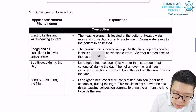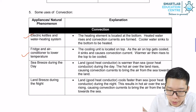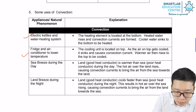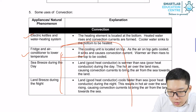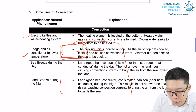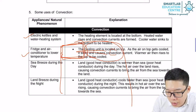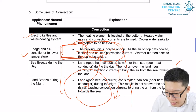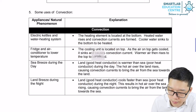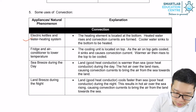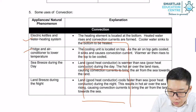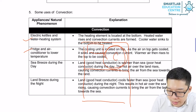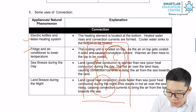The next example is a fridge or air conditioner. Taking air conditioning for example — inside the room, the aircon is normally placed on top. When it cools the air up there, the cold air comes down and the hot air goes up to be cooled again. So it forms a convection current, and eventually the whole room is cooled.